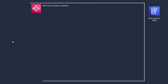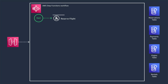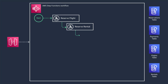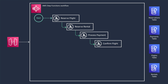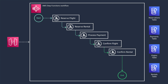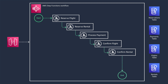That is where the Saga pattern can help. A saga is defined as a sequence of local transactions, with each local transaction doing some work — like updating the database, publishing a message, or an event to trigger the next local transaction.